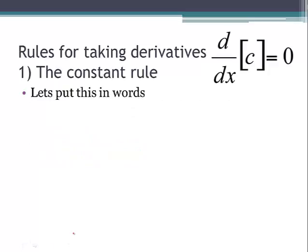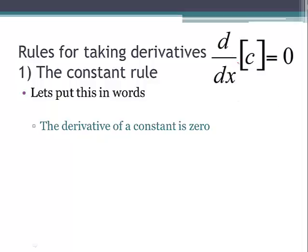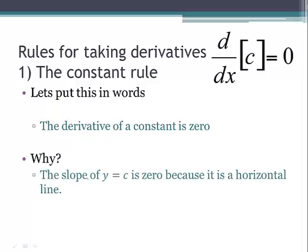First one: constant rule. Anytime you take the derivative of a constant, you get zero. The derivative of a constant is zero. Why? Because the slope of the line y equals c — y equals any number — is zero because it's a horizontal line. Anytime you're taking the slope of a horizontal line, it's a flat line with zero slope, so our derivative is zero.